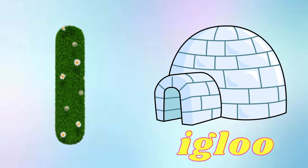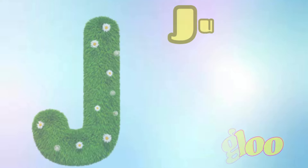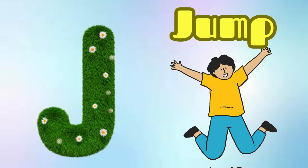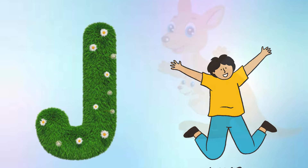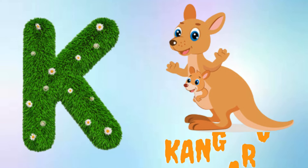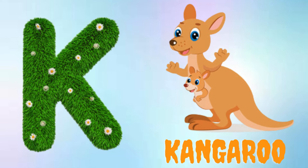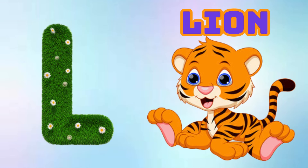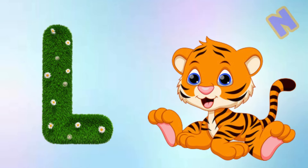I is for Igloo, I-I-Igloo. J is for Jump, J-J-Jump. K is for Kangaroo, K-K-Kangaroo. L is for Lion, L-L-Lion.